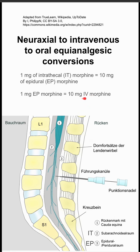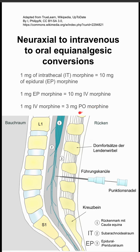To convert this to IV morphine, one milligram of epidural morphine is equal to ten milligrams of IV morphine. Now to convert to oral morphine, or PO morphine, one milligram of IV morphine is equal to three milligrams of PO morphine.